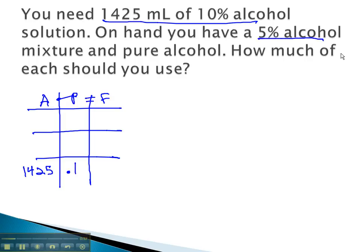On hand, we have a 5% alcohol mixture. As a decimal, that's 0.05. And we have a pure alcohol mixture. Pure alcohol will be 100%, or 1.0. We don't know the individual amounts, so we'll call them x and y.